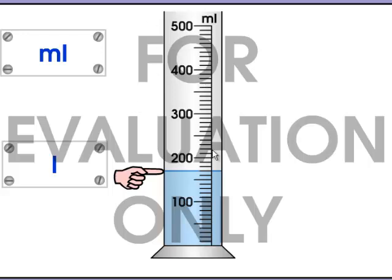Now, the larger the graduated cylinder, the less exact the milliliters are going to be. You're not going to be able to, the less exact the measurement is going to be. The smaller the numbers, the more exact the numbers are going to be, the volume.